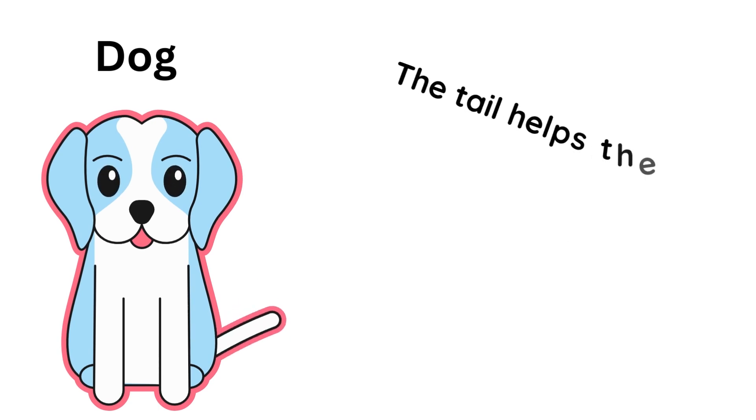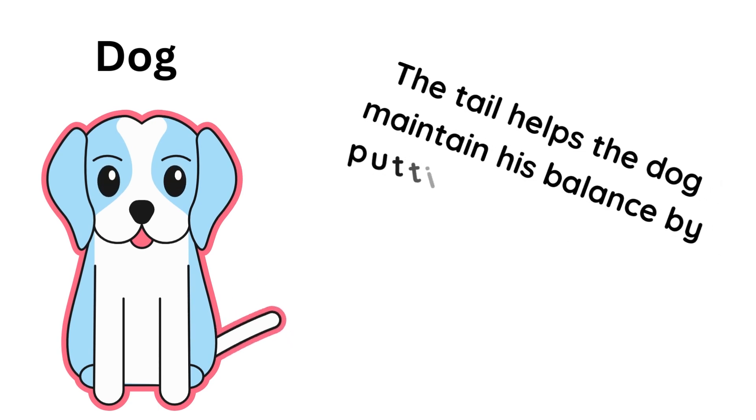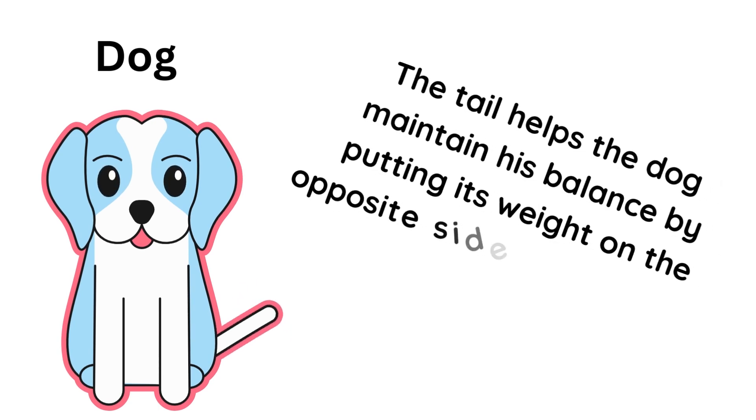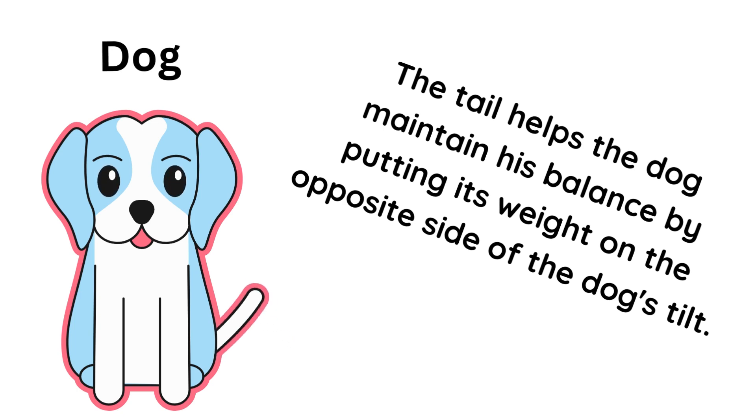The tail helps the dog maintain his balance by putting its weight on the opposite side of the dog's tilt. Dogs that enjoy climbing various surfaces will use their tails to balance on uneven footing, such as rocks or trees.